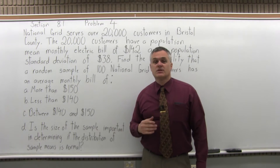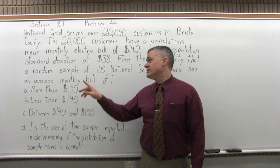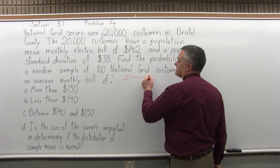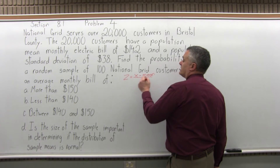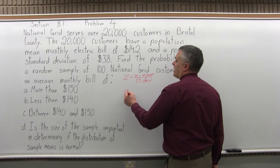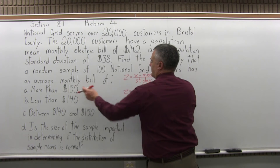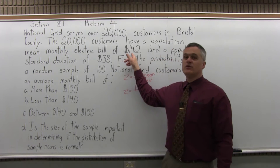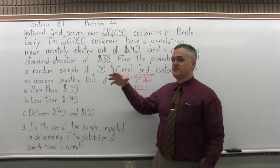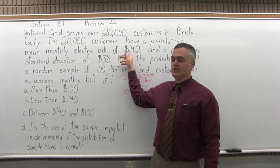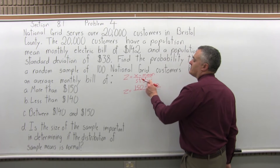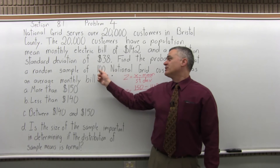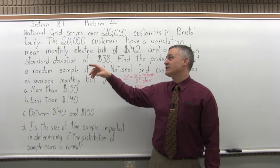For the $150 bill, we have to look it up in the standard normal chart, so we'll need to find the Z-score for 150. The formula is Z equals X minus the mean over the standard deviation. For this problem, X is 150, minus the mean. I can use the population mean of 142, but in reality what I want is the mean of the samples of size 100, which also comes out to 142.